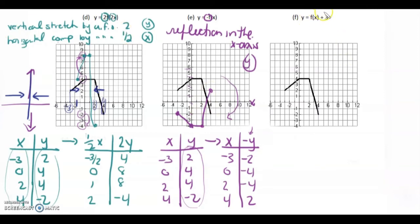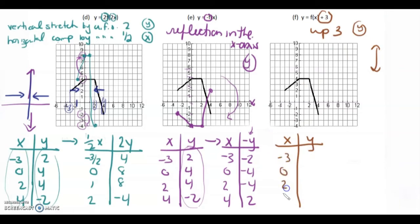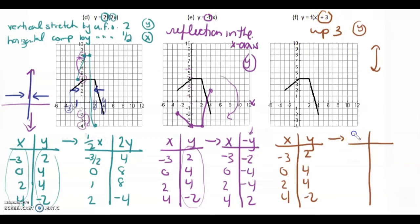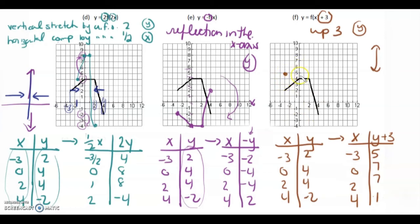Now this one — going up and down affects the y. So we have the original: negative 3, 0, 2, 4 for x, and 2, 4, 4, negative 2 for y. If we're going up 3, we take every single y and add 3 to it. Write the x's as they are: negative 3, 0, 2, 4. Then take every y and add 3: 2 plus 3 is 5, 4 plus 3 is 7, 4 plus 3 is 7, negative 2 plus 3 is 1. Then we graph it.